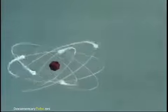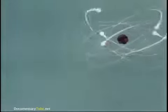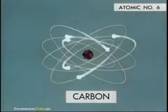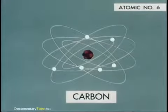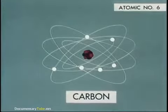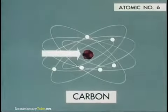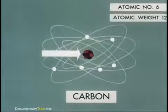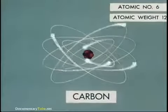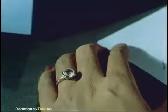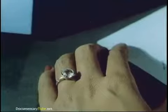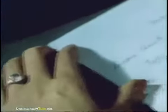Going up the ladder, we find elements with atoms that become progressively complicated, with more electrons and increased numbers of protons and neutrons in their nuclei. For example, a neutral carbon atom with an atomic number of six has six electrons. In the nucleus are six protons plus six neutrons, so the atomic weight is twelve. Carbon exists in many forms, high and humble, as diamonds and pencil points.